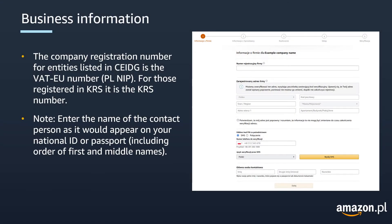The company registration number for entities listed in the CEIDG is the VAT-EU number. For those companies registered in the KRS, it is the KRS number. Please note that you have to enter the name of the contact person as it would appear on your national ID or passport, including the order of all first and middle names.